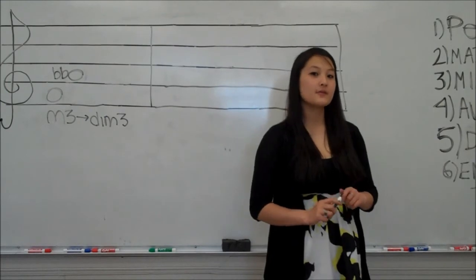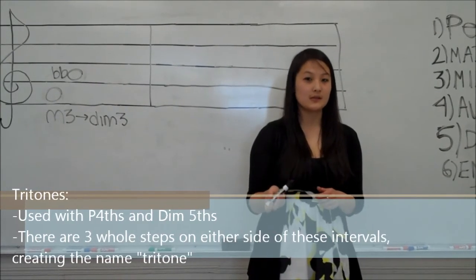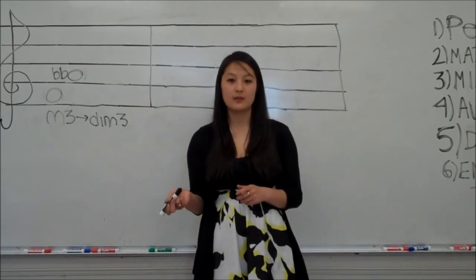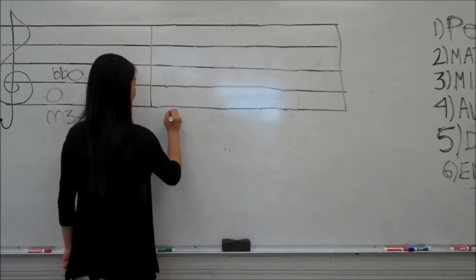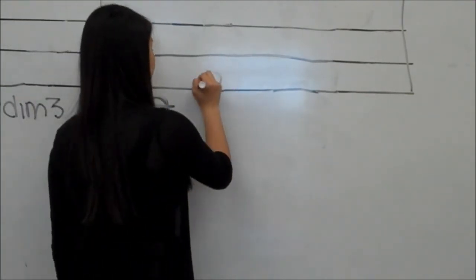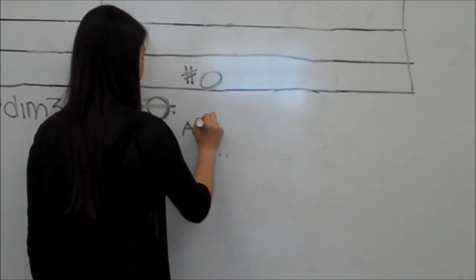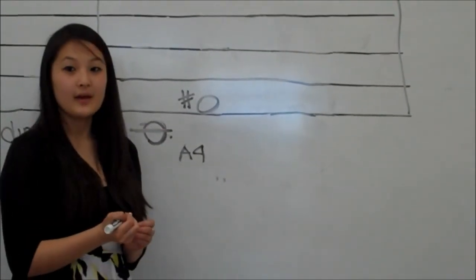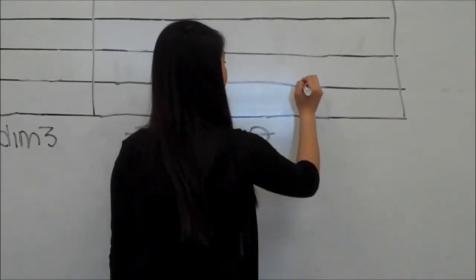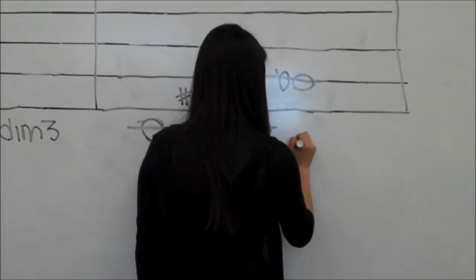Tritones fall under the category of enharmonic intervals. Tritones are used with augmented fourths and diminished fifths, because these two divide an octave into two parts, and they're three whole steps apart, giving them the name tritone. So, if we had a C going to an F sharp, this would be an augmented fourth and also three whole steps apart. And then, if we had a C going to a G flat, this would also be a tritone, because it would be a diminished fifth.